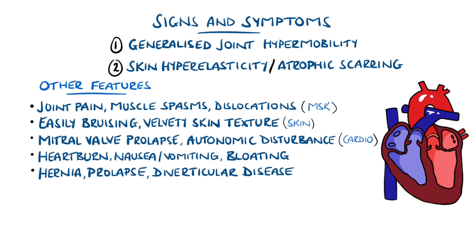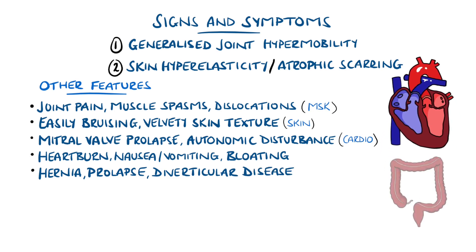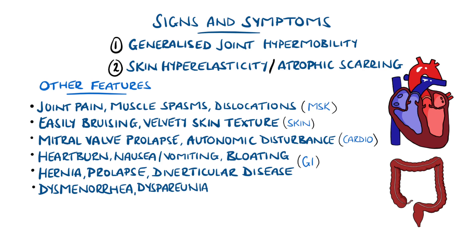In vascular EDS, there is a higher risk of perforation. Females also tend to suffer dysmenorrhea and dyspareunia — meaning pain during menstruation and sex respectively — and may also have abnormal uterine bleeding.